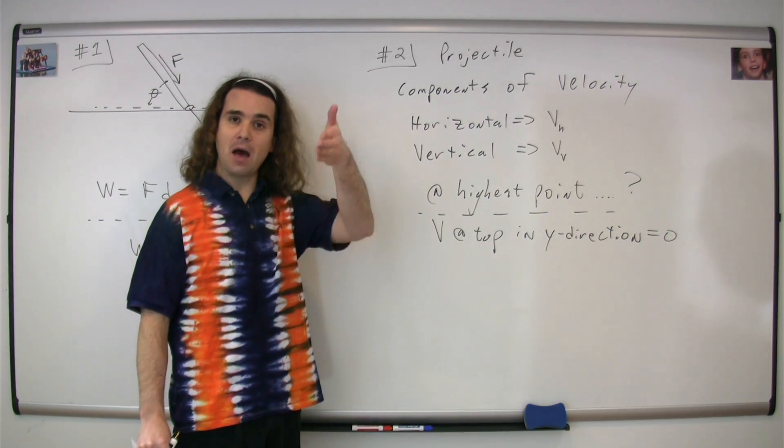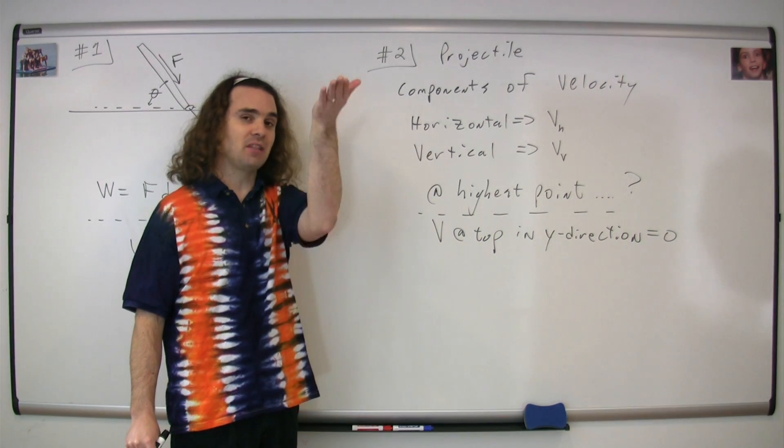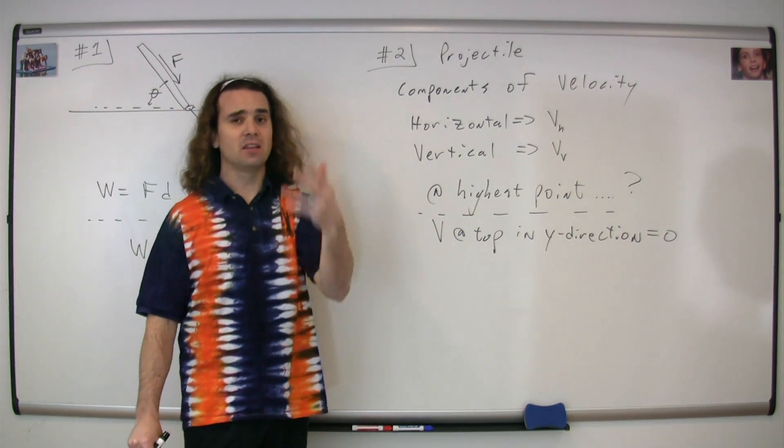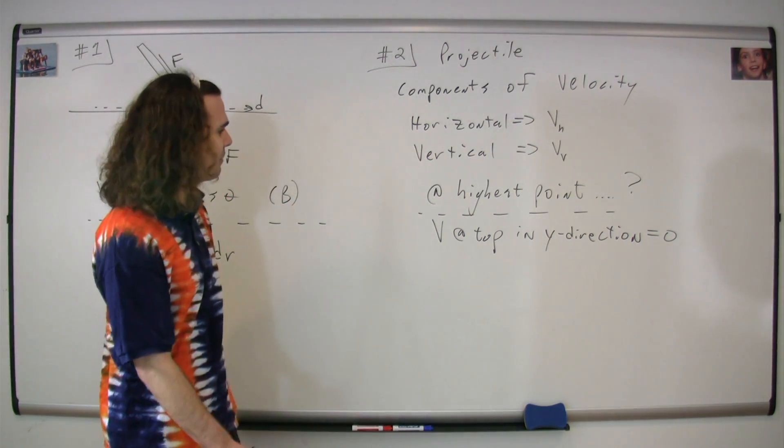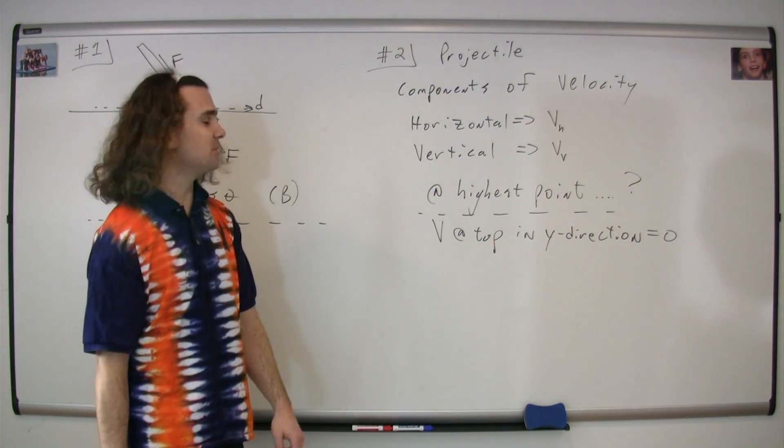That's because in the y direction it's going up and then coming back down, so it has a positive velocity and then switches to a negative velocity. Therefore it must be zero at the very top.